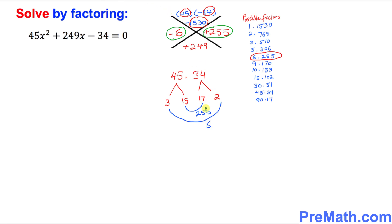That means what we got is our factors turn out to be 6 times 255. This is another approach.